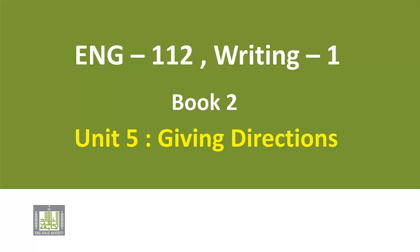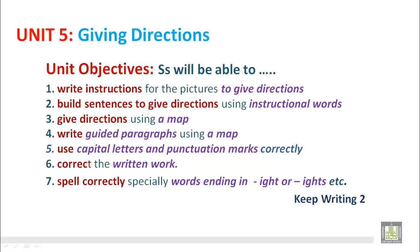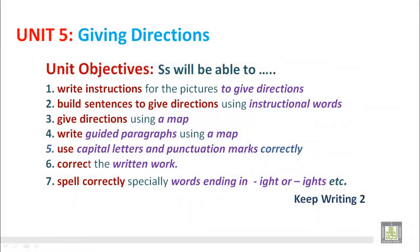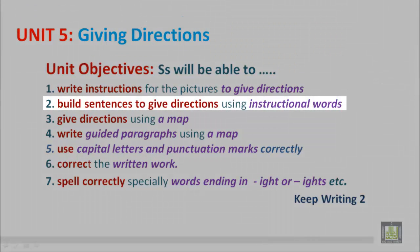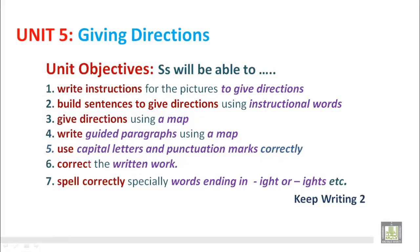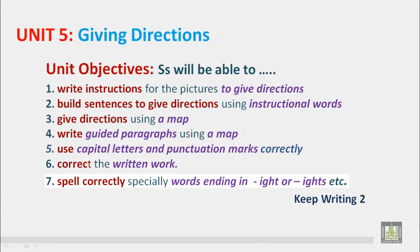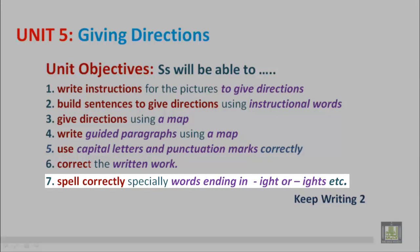Book 2, Unit 5: Giving Directions. Unit Objectives: Students will be able to write instructions for pictures to give directions, build sentences to give directions using instructional words, give directions using a map, write guided paragraphs using a map, use capital letters and punctuation marks, correct written work, and spell correctly, especially words ending in I-G-H-T or I-G-H-T-S.